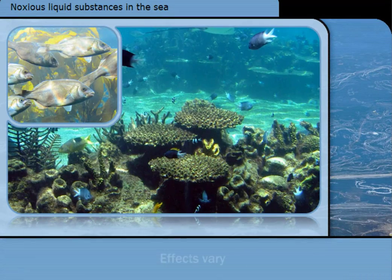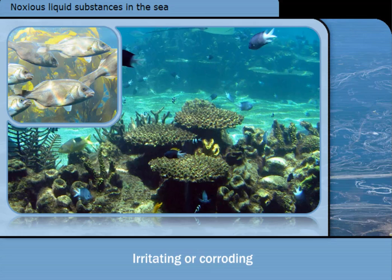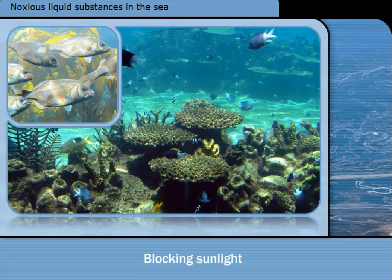What happens when a noxious liquid substance enters the sea depends on its chemical and physical properties, and these vary widely from substance to substance. What noxious liquid substances have in common is that they can harm life by poisoning it, causing irritation or corrosion, coating plants, or blocking their sunlight.